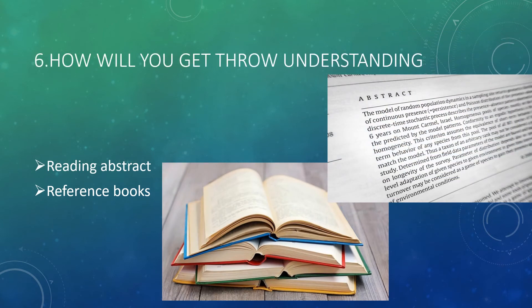How will you get a thorough understanding? The very first is whenever you see an article, in the starting of the article you can see the abstract. That is nothing but the summary of the whole article, so just read that and understand the article. The second is reference books. If you have some reference book, then just read the reference book. You can get a lot of information from there.